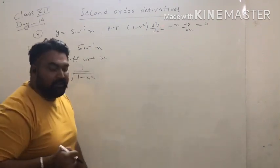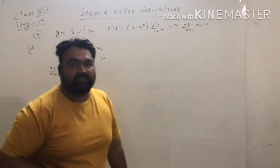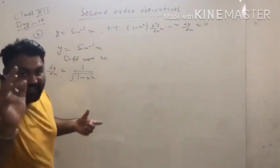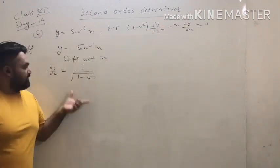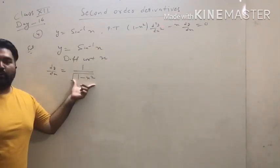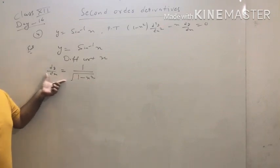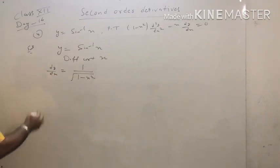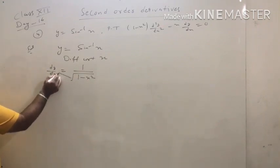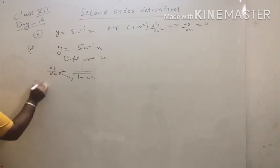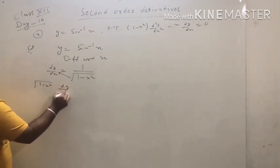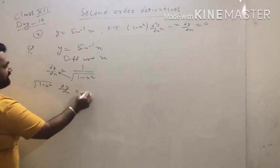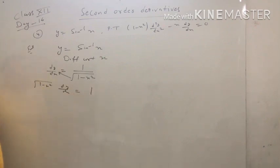Note here a very important thing: shift the denominator √(1 − x²) to the left side. So √(1 − x²) · (dy/dx) = 1. Now to eliminate the root, square both sides.